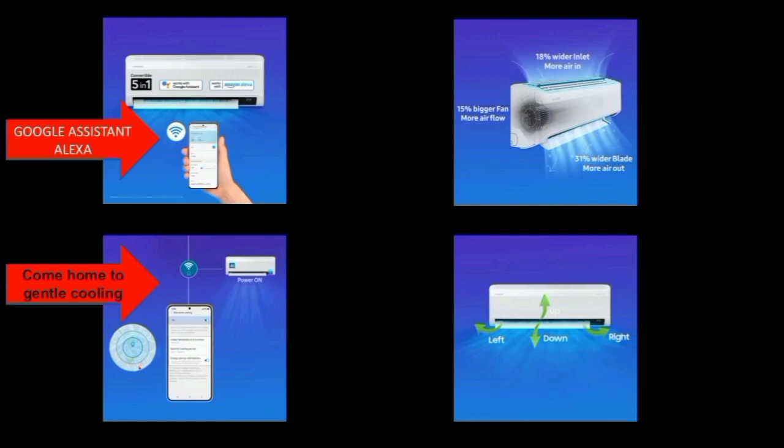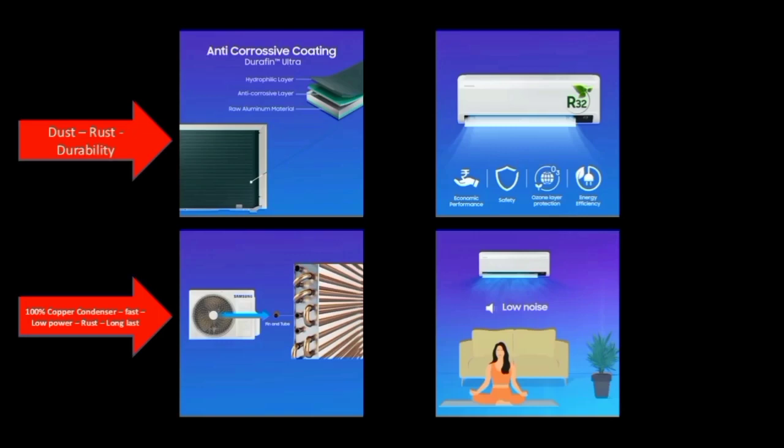This is an extra bigger fan size. The fast-cooling area uses a fast fan size. These are the AC wings — up, down, left, right. This is anti-corrosion coating. The dust is kept dry for durability.